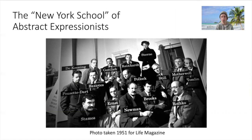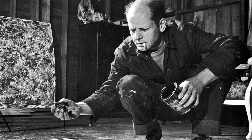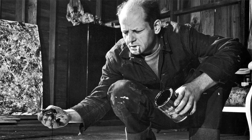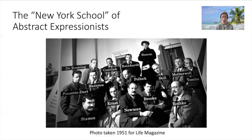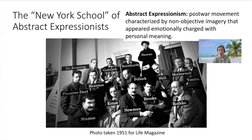Here they're posing for Life magazine, and someone added their names — this was not in the original Life photograph, but it's helpful to identify all of them. Several of the artists were émigrés from Europe, including de Kooning from the Netherlands, Mark Rothko from Latvia, and Arshile Gorky from Armenia. Jackson Pollock was from Cody, Wyoming. As a group they were referred to as the New York School first, and later abstract expressionists.